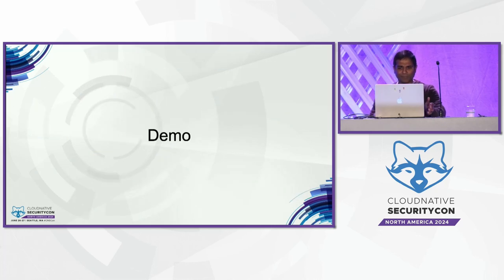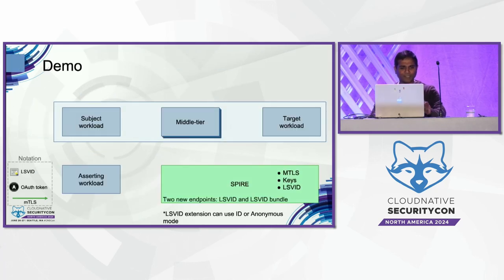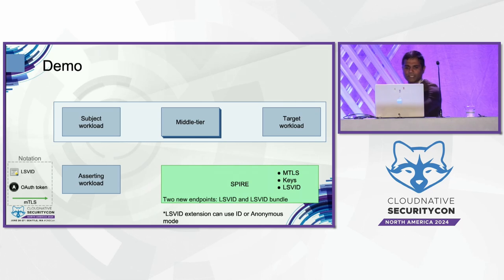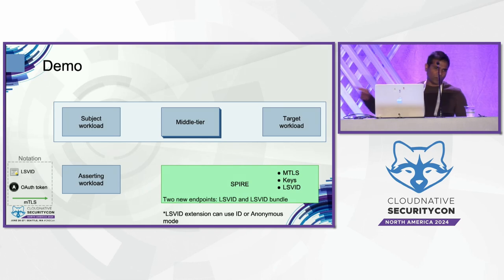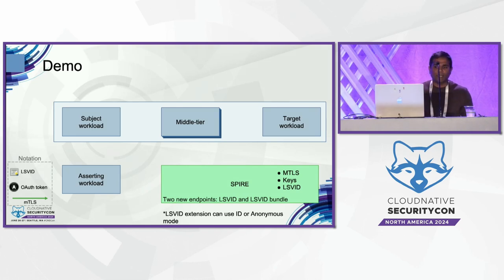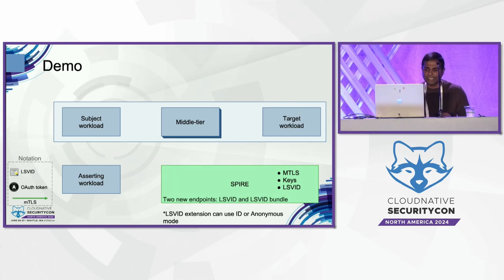In the demo, we have a simple subject workload, middle tier, and target. The target workload is communicating with OpenAI, but it could be anything. In the middle tier, we have some small models working internally. When a user logs in with Okta, rather than using the Okta token, we swap that out with the LSWID document — Lightweight SPIFFE Verifiable Identity Document. If you're from the SPIFFE world, you're familiar with SVIDs; we've basically added an extension to SVID.